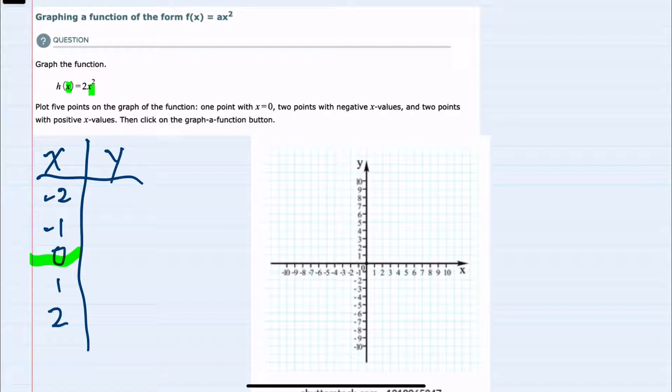Starting with zero, I would have h(x), which is our y value, equals 2 times x squared, that would be 2 times 0 squared. And I'm using parentheses here to note that only the zero is being squared.